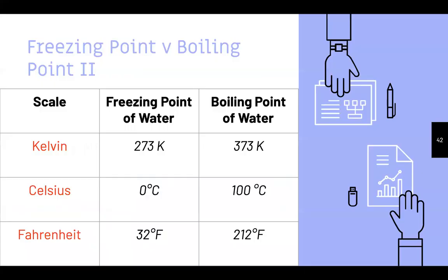The freezing point of water is 273 K, 0°C, or 32°F. The boiling point is 373 K, 100°C, or 212°F.